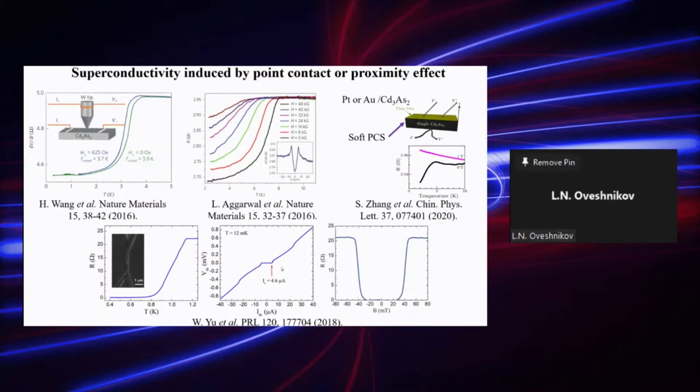Many recent works are focused on the studies of Josephson junction based on the cadmium arsenide microstructures. All of these works basically suggest that if you can realize superconductive state in cadmium arsenide by the proximity effect or the local hydrostatic pressure,